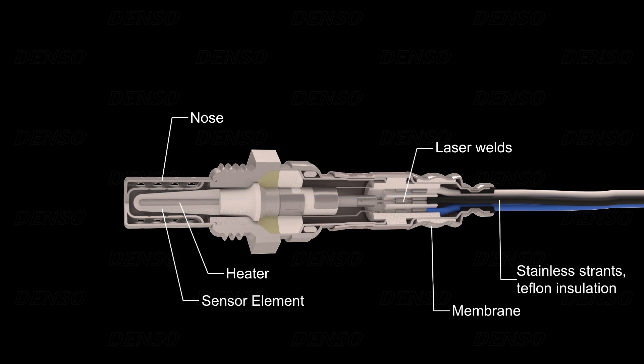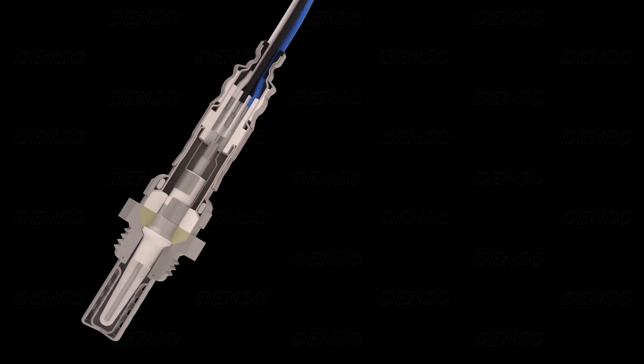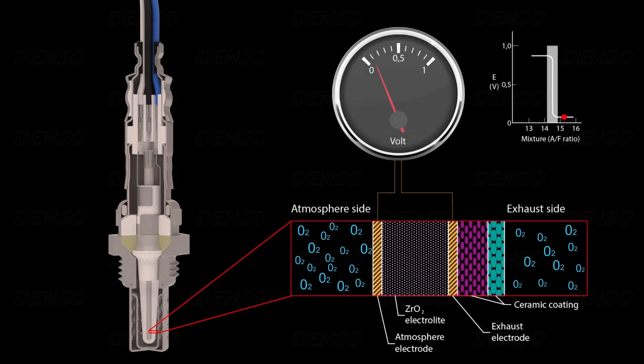It was previously mentioned that oxygen ions can diffuse through the element, and they typically do so from higher to lower concentrations. Therefore, the oxygen ions diffuse through the element from the atmospheric side to the exhaust gas side. As a result, this flow of oxygen ions through the zirconium dioxide element produces a small voltage.